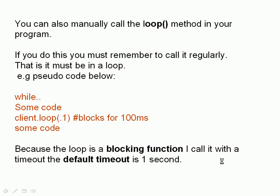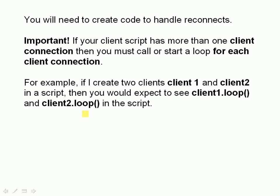You can call the loop manually, and if you do that, you have to do it at regular intervals. Here's a bit of pseudocode — you have some while loop, and inside that while loop you call the loop at regular intervals. The loop is a blocking function and it defaults to one second, so it basically sits there and waits. I tend to use a shorter period, like 100 milliseconds. If you're going to call the loop manually, you also need to include client code to handle reconnects, because it doesn't handle reconnects automatically.